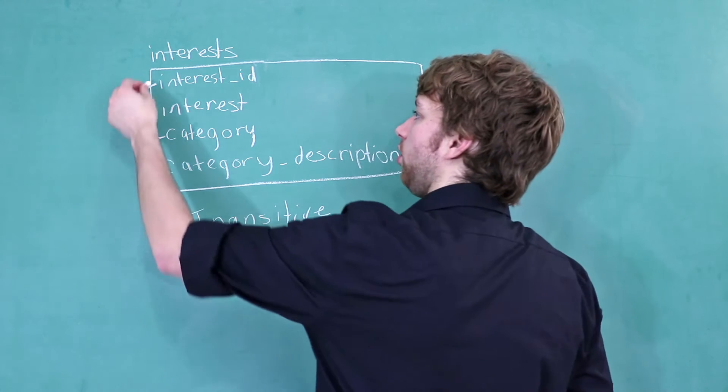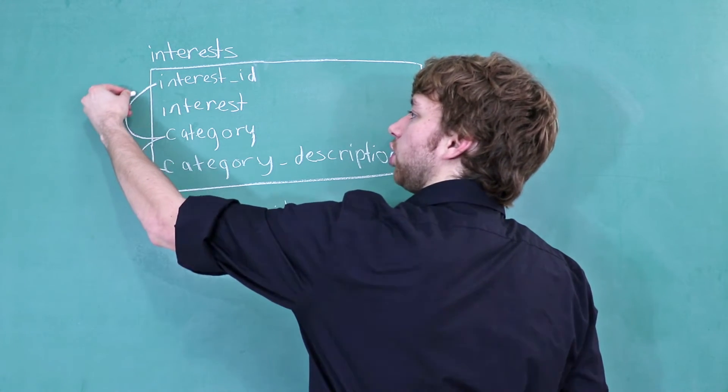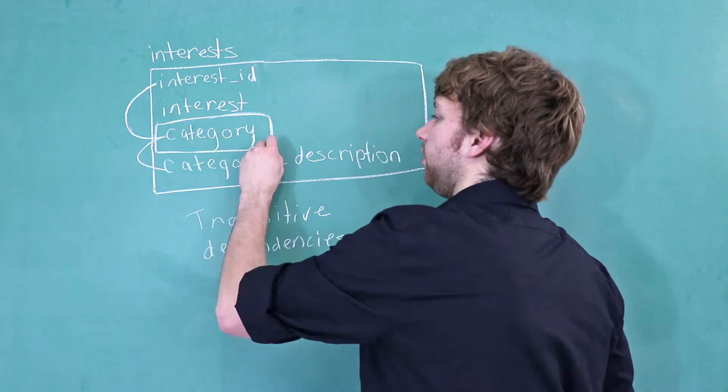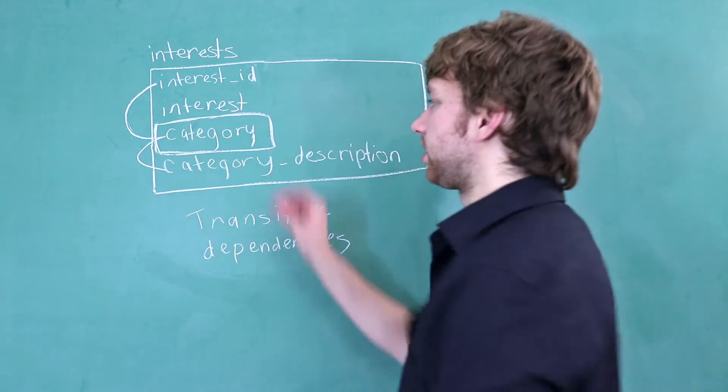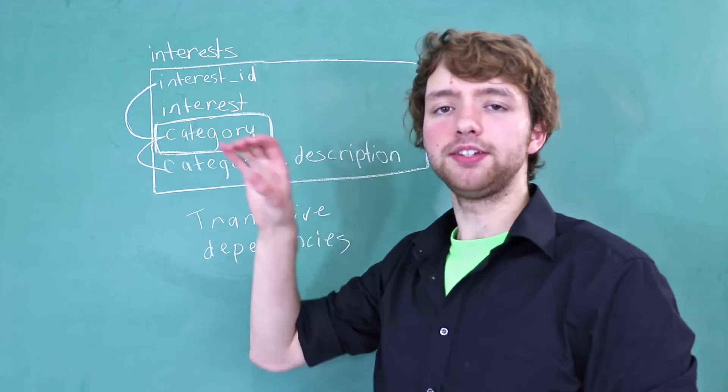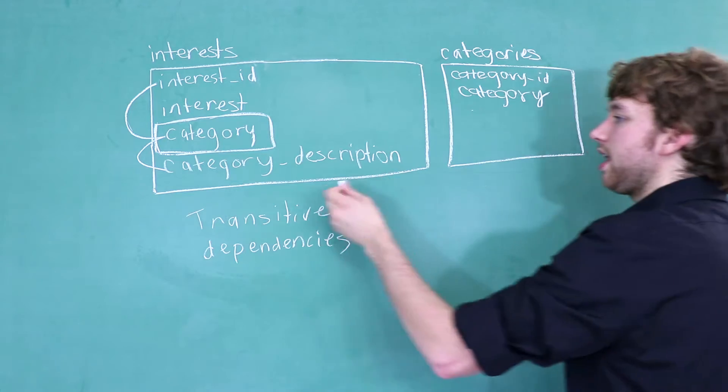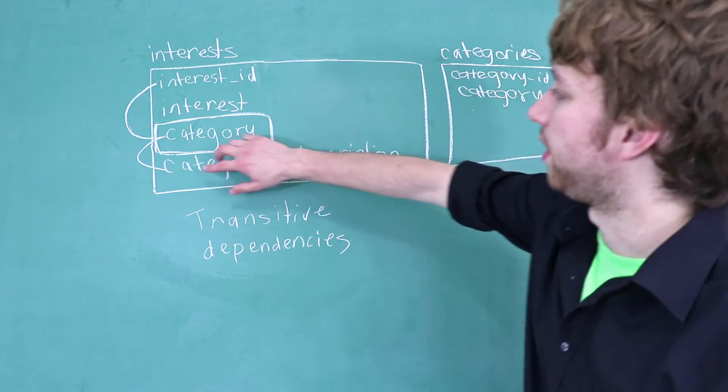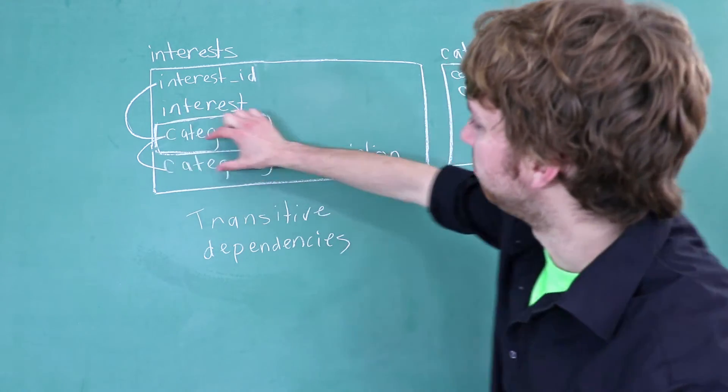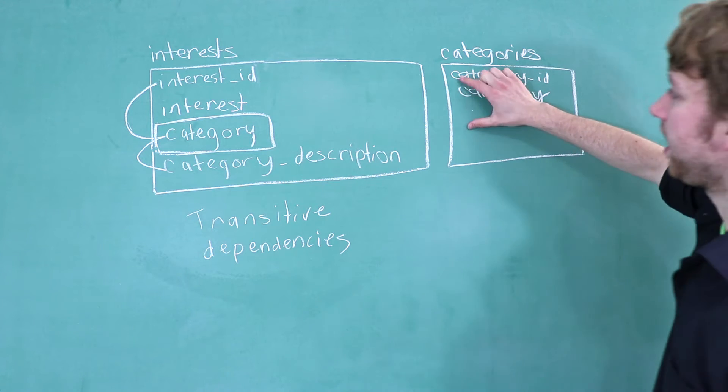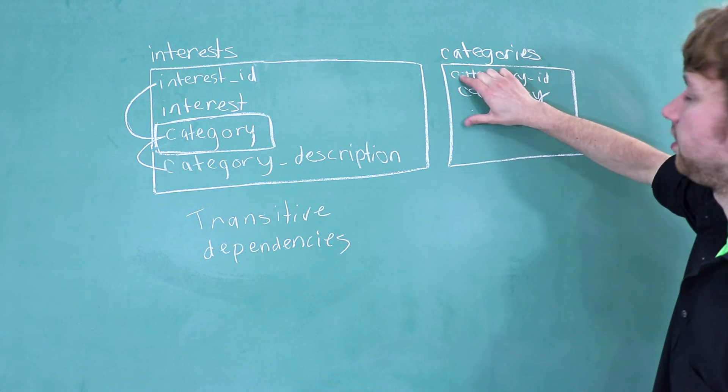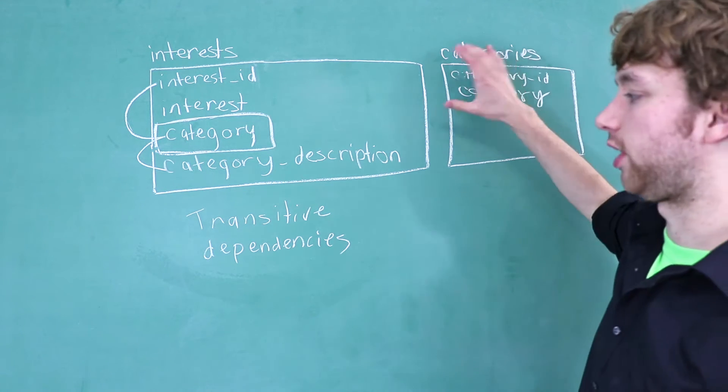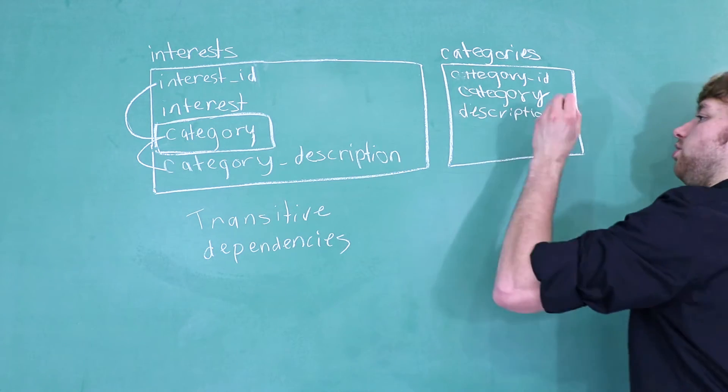The way you fix this is by going from the entity and going up one hop, and whatever this attribute is, you're going to take that and make it an entity in its own table. And now you can take this dependency right here and move it over here, and now since it'll be referring directly to the category, it's not a transitive dependency. This is just a normal dependency.